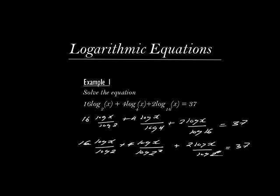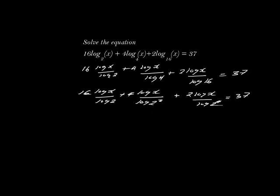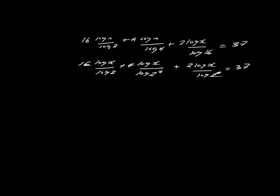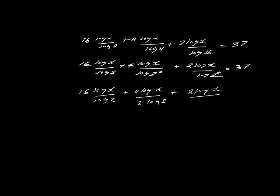From the laws of logarithms, a power of a number inside the log can be written as a coefficient of that logarithm. So if you have log 2 to power 2, that power 2 becomes the coefficient. So we have log x over log 2, plus 4 log x over 2 log 2 in the denominator, then plus 2 log x over 4 log 2 in the denominator. The power becomes a coefficient, and the whole of that is 37.